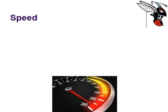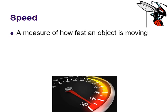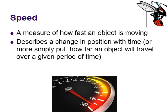This gets us to speed, which is a familiar concept, but it might be a little bit more difficult to pinpoint. So you've all experienced varying levels of speed in cars or on bicycles or running or anything like that. It's a measure of how fast an object is moving. But in particular, speed describes a change in position with time. So how far does an object move over a given period of time?